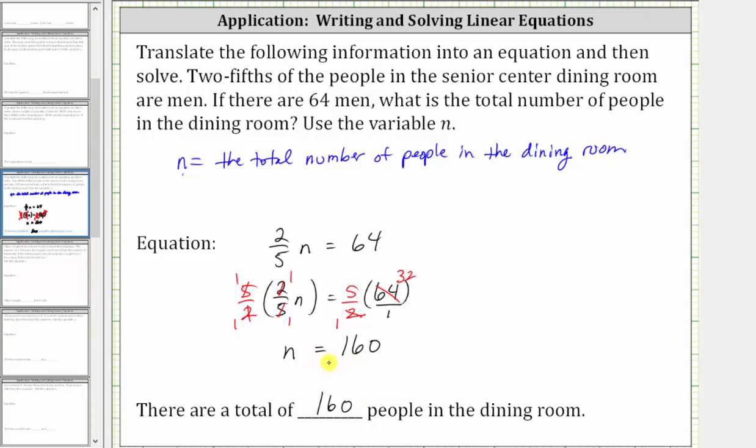Before we go, let's verify n equals 160 does satisfy the equation two-fifths n equals 64. If we substitute 160 for n, we have two-fifths times 160 equals 64.